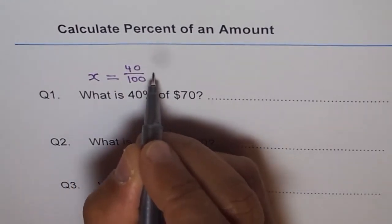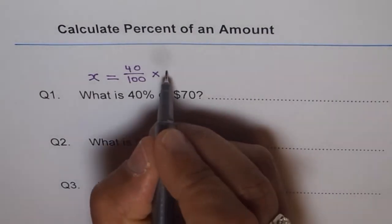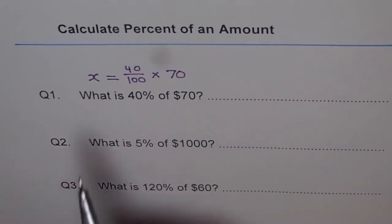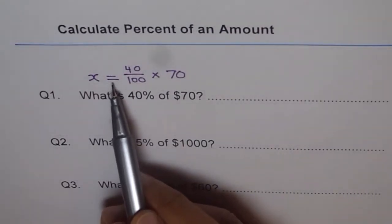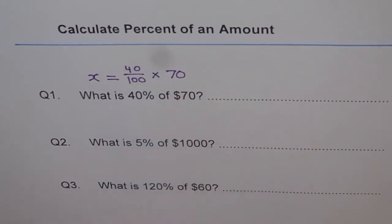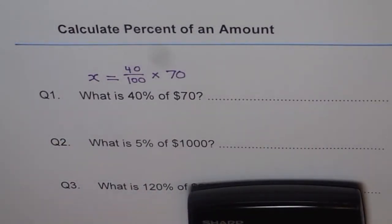'Of' translates to multiply, and then 70. Now you need your calculator. Do 40 divided by 100, then times 70 equals — you get 28.